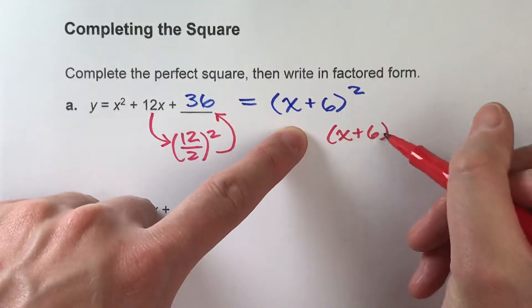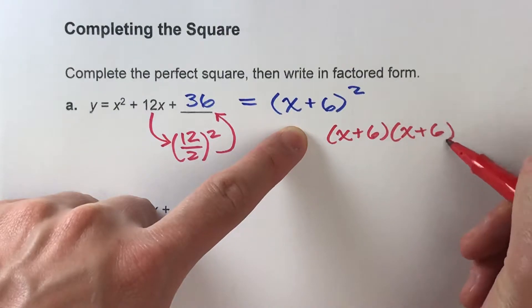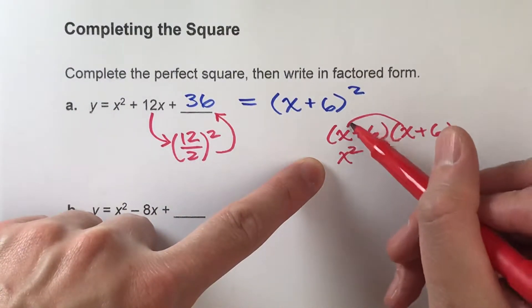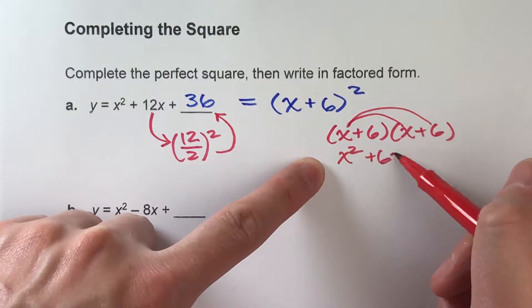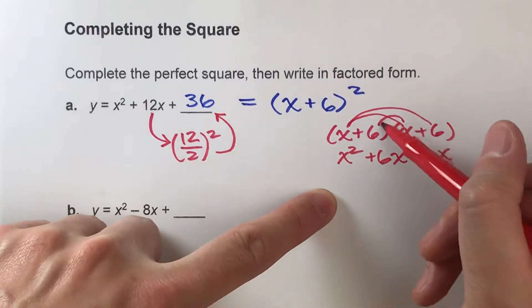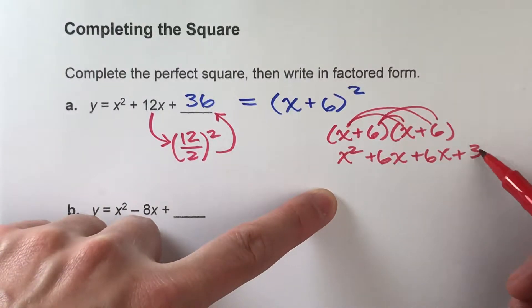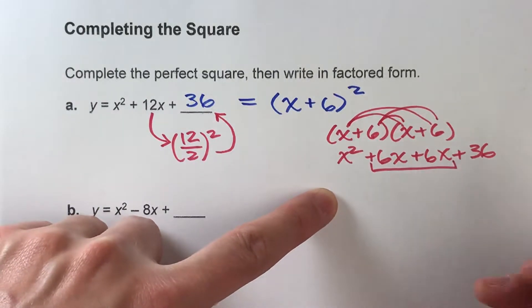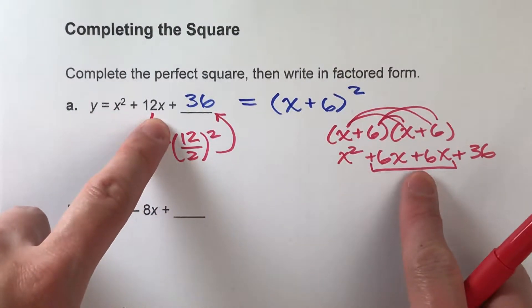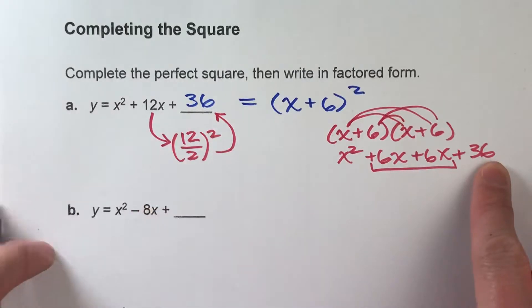So x plus 6 squared means x plus 6 times x plus 6. And if we multiply this out, x times x is x squared, x times 6 is 6x, 6 times x is 6x, and 6 times 6 is 36. And if I combine my like terms, you'll see that this is 12x, so we have x squared plus 12x plus 36. There you go.